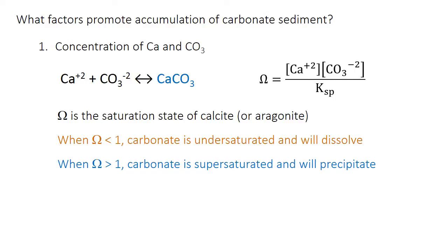Carbonate sediment precipitates from calcium and carbonate ions in seawater. Its chemical equilibrium is governed by the solubility product, Ksp. We can define a term called omega, which is the ratio of the concentrations of calcium and carbonate ions divided by the solubility product Ksp. Omega is called the saturation state. There's an omega or saturation state for calcite, and also one for aragonite, which is slightly different — aragonite is slightly more soluble in seawater. An omega of less than one means that carbonate is undersaturated and therefore should dissolve back into calcium and carbonate ions. Omega greater than one is supersaturation, where carbonate should precipitate from dissolved ions in the seawater, at least under equilibrium conditions — there can be kinetic barriers to precipitation.